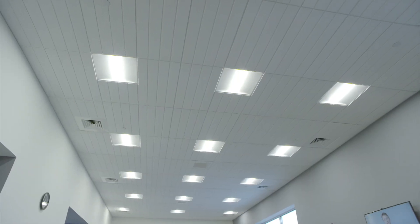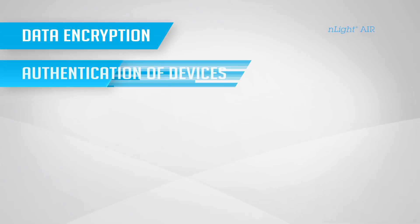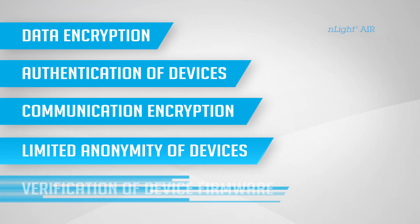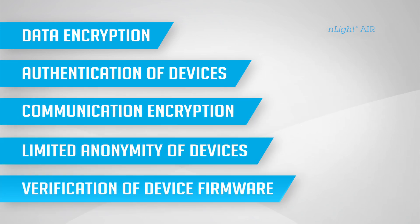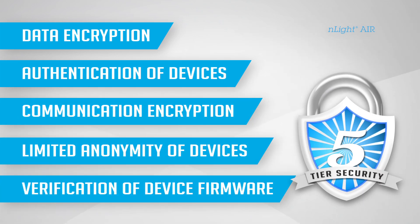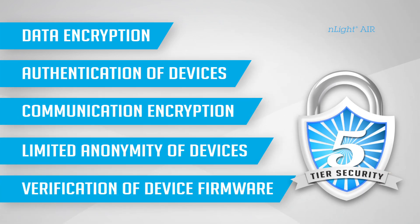In today's world, a secure wireless system is essential. nLight Air's five-tier security architecture far exceeds other networks. These five tiers represent the lighting control industry's most comprehensive security architecture.